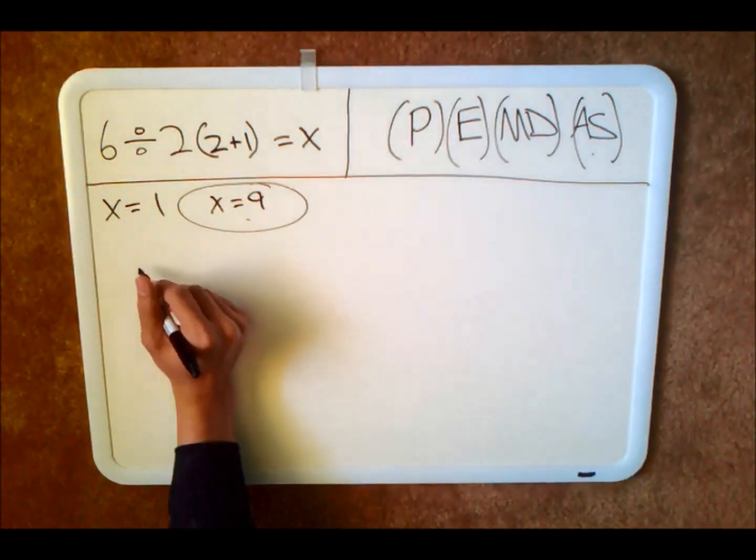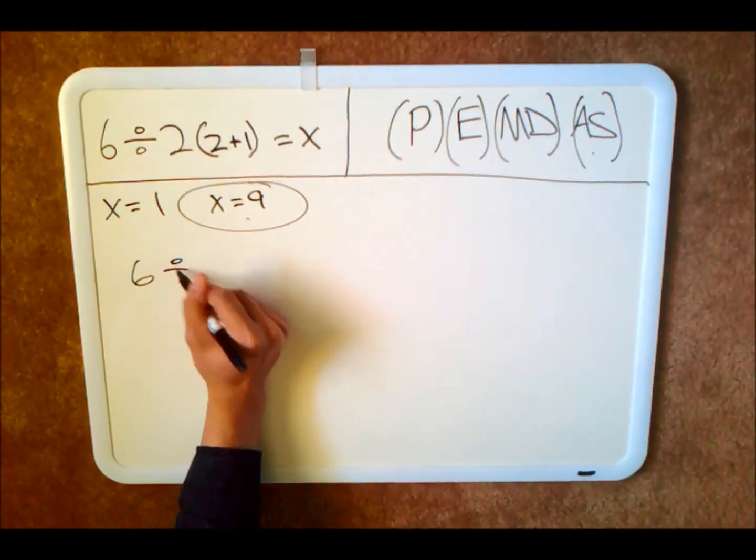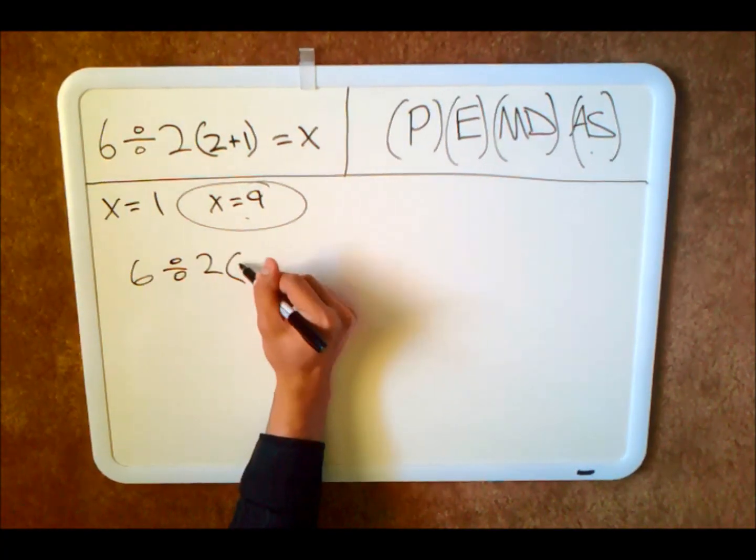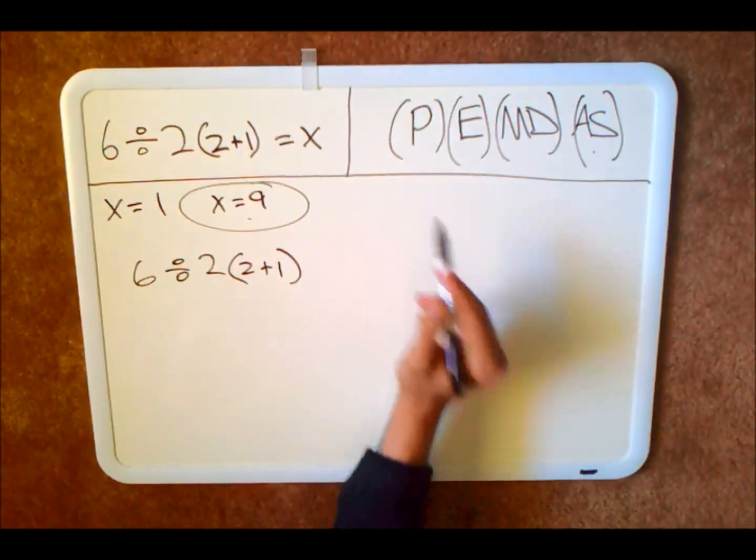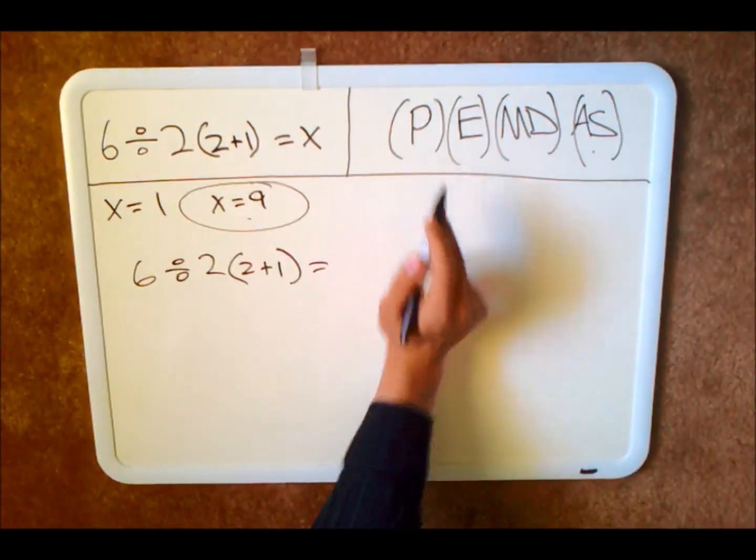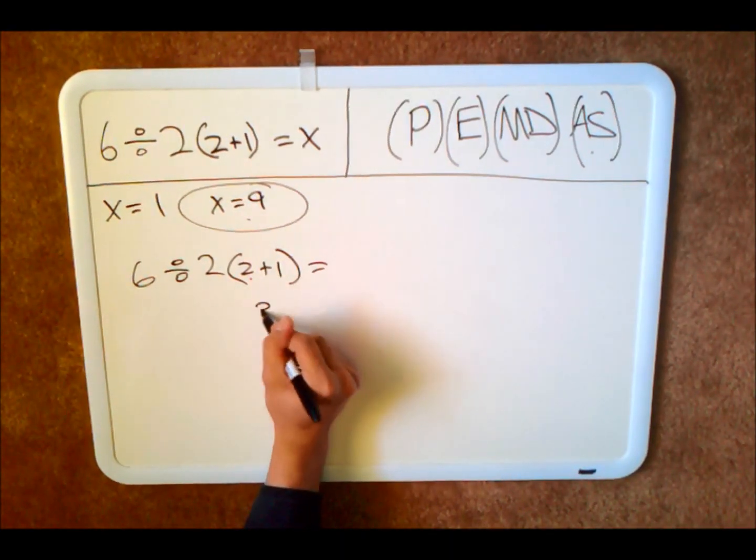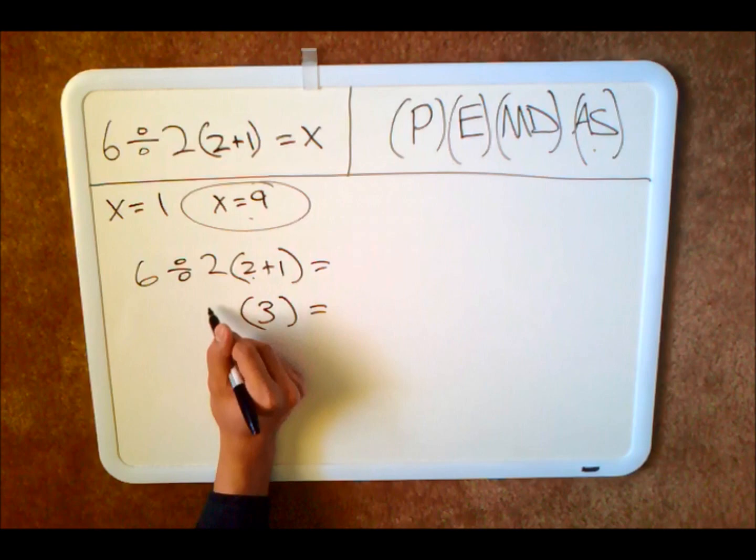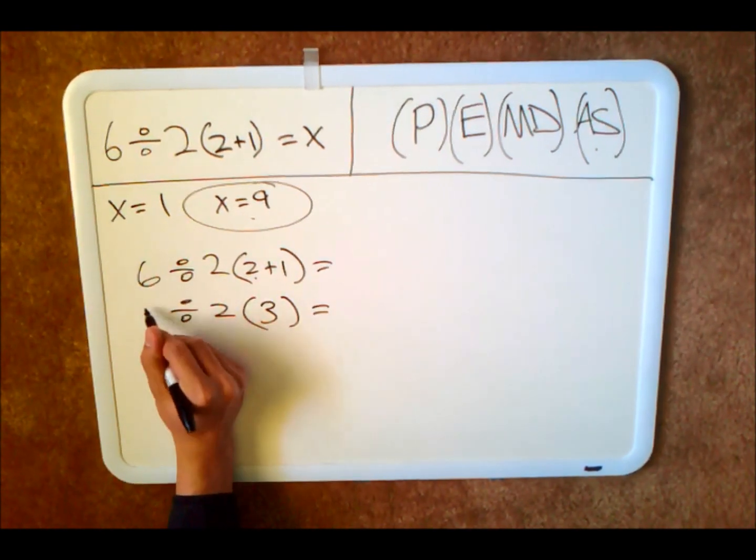So to start the problem, we'll have to do 6 divided by 2, open parenthesis, 2 plus 1, close parenthesis. The first step in order of operations is parenthesis. You do the 2 plus 1 and you get 3. Bring down the 2, bring down the division sign, and the 6.